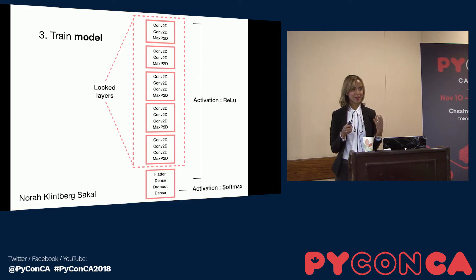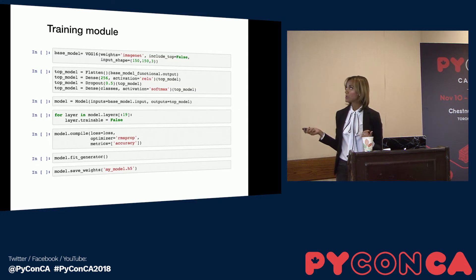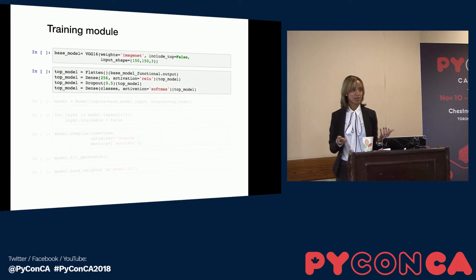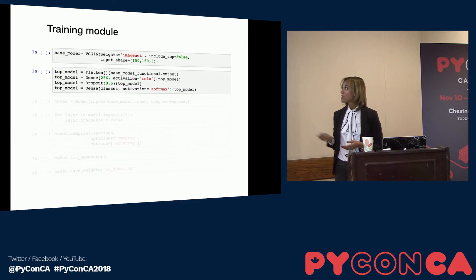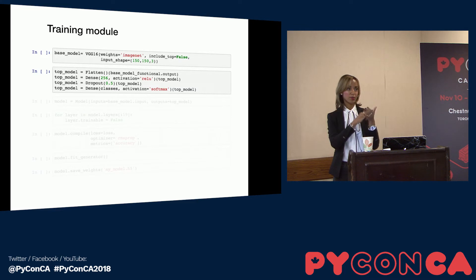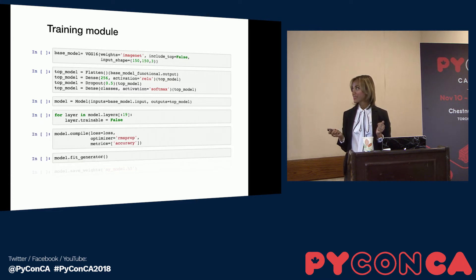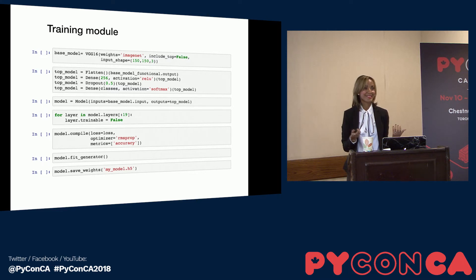I know this might sound like a pretty complex model or network, but I want to show you how few lines of code are needed for you to train the exact same model. This is everything you need — built in Keras, a high-level deep learning library built on TensorFlow. You initialize the base model, add your own custom top because ImageNet has 1,000 categories and you only need four, initialize the model, lock the layers you want to use with the pre-trained weights, compile it, train it, and save your model. So few lines of code are needed to train your own model.